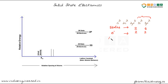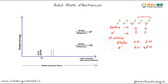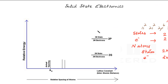Now let's consider a system where we have n atoms. For n atoms, we have 2n states in the 3s subshell and 6n states in the 3p subshell. The number of electrons is 2n in the 3s subshell and 2n in the 3p subshell. When the atoms are really far apart, as you can see in this diagram, the energy levels may coincide.